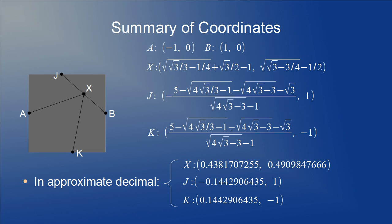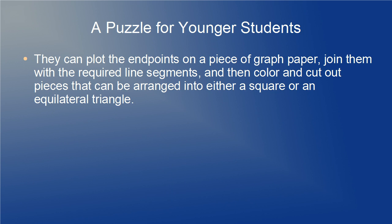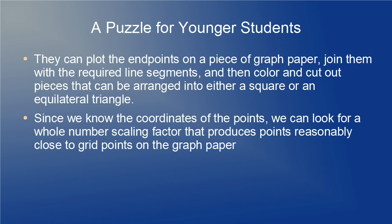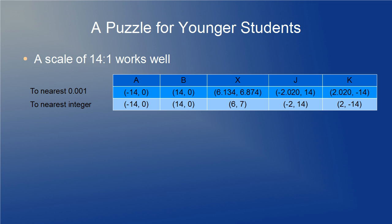Now let's go to that final puzzle for elementary school students. We would like them to plot the points on a piece of graph paper, join them with the required line segments, then color and cut out pieces that can be arranged into either a square or an equilateral triangle. Now that we know the coordinates of the points, we can look for a whole number scaling factor that produces points reasonably close to grid points on the graph paper. A scale of 14 works well as you can see in the chart here. J and k are quite close. X needs just a bit more rounding, but nothing too extreme.